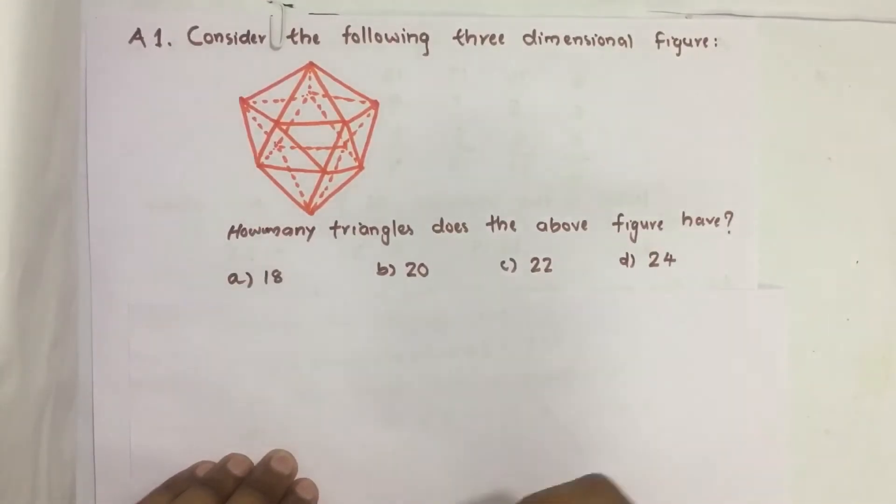So in order to avoid this mistake, we categorize the items given in the figure. Here the item is triangle.